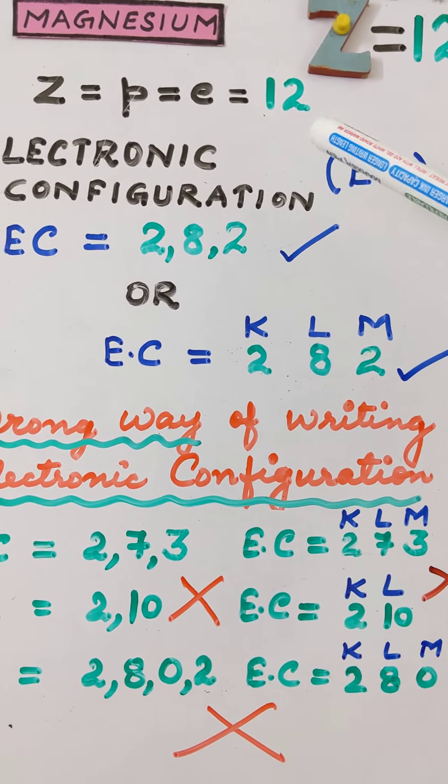Therefore the correct representation for the magnesium atom is 2 electrons in the K shell, 8 electrons in the L shell, and 2 electrons in the M shell — giving an electronic configuration of 2, 8, 2. The magnesium atom has 3 shells in total: K, L, and M.